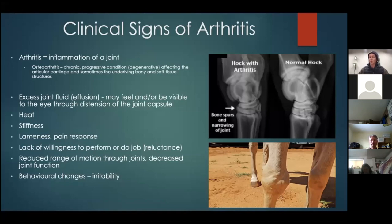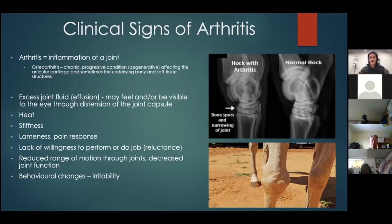However, that extra fluid isn't the same quality as normal. Normal joint fluid should be a small amount, golden yellow, and sticky — it should cling to your fingers. When a joint becomes diseased, we often produce more fluid of poor quality — less viscous, more watery, and sometimes less golden-yellow — which are indicators of a diseased joint.